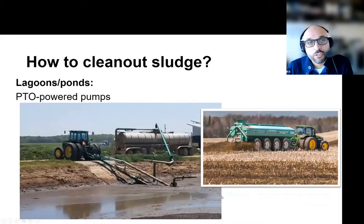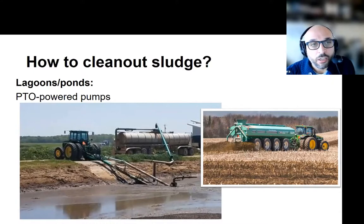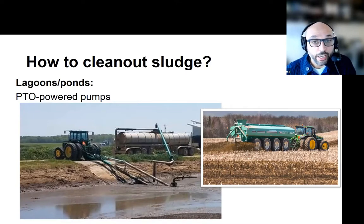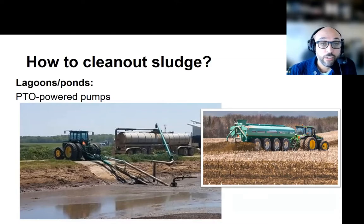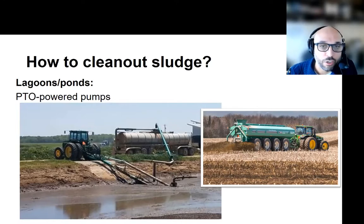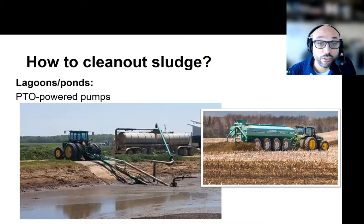Now that we know how much sludge and what's in the sludge, how do we remove it? Commonly we rely on PTO power pumps, agitating the lagoon or structure and connecting the suspended slurry into a manure hauler or tanker to take it for land application in fields. This is one of the critical processes that requires a trained operator to ensure the integrity of the equipment but also the integrity of the berms for these lagoons.